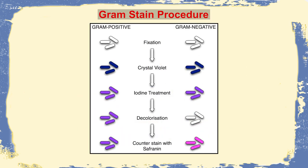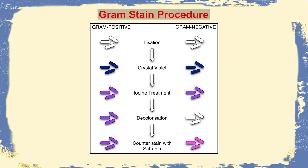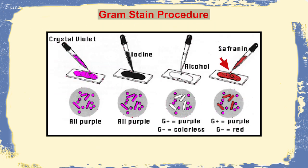As seen in the slides, Gram-positive bacteria take up the crystal violet color due to fixation with iodine, and decolorization cannot be achieved with alcohol. In Gram-negative bacteria, the thin peptidoglycan layer causes loss of the primary crystal violet stain upon treatment with alcohol, and the secondary stain safranin is taken up, causing the cells to appear red.